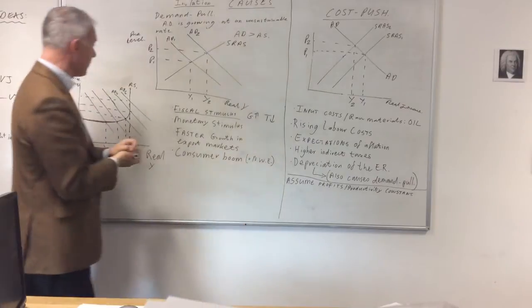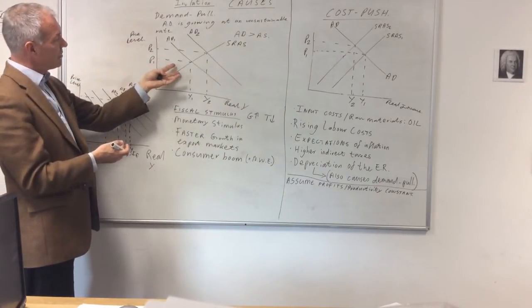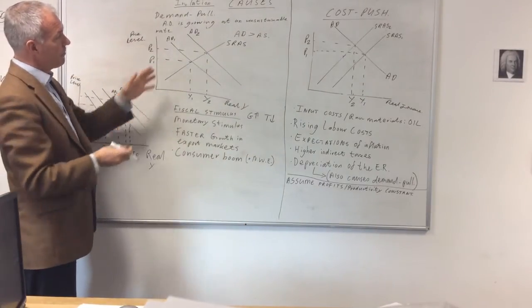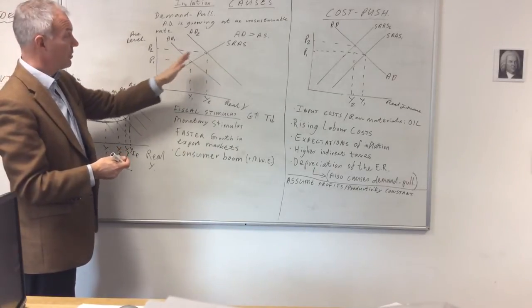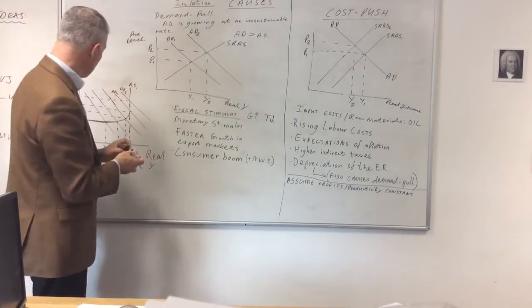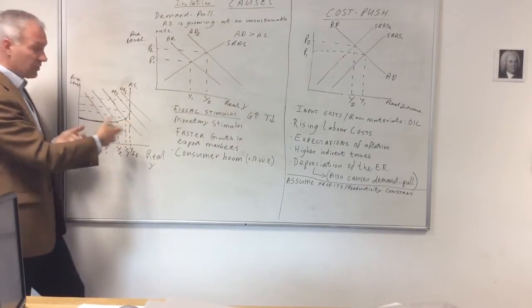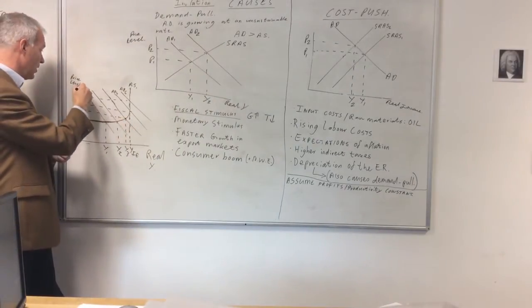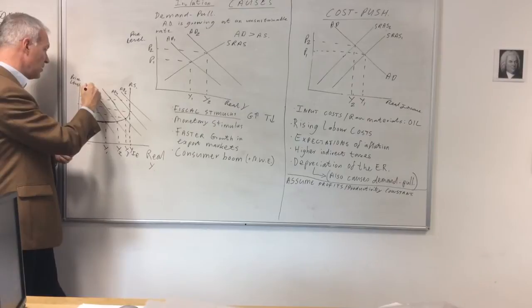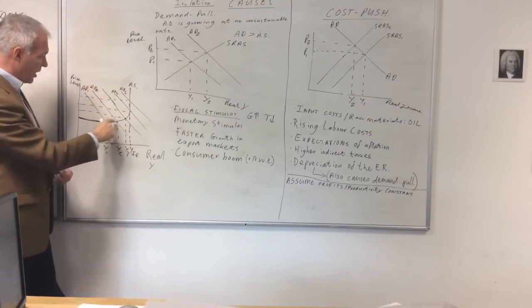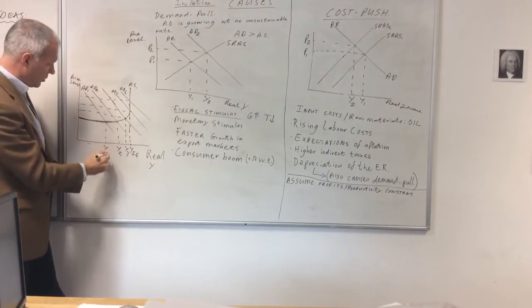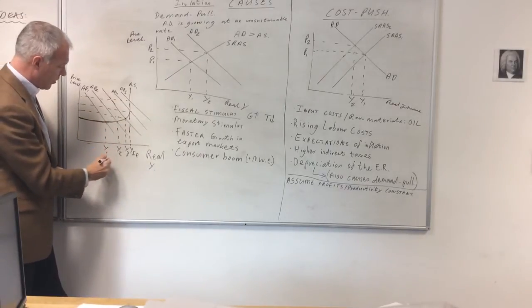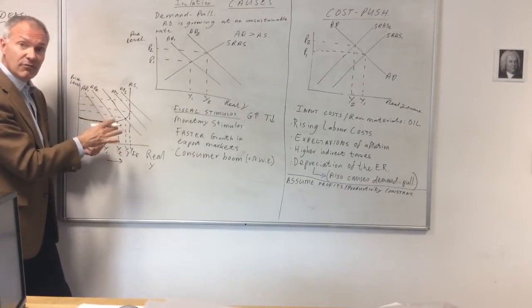However, it's worth noting that you will only really get demand-pull inflation if aggregate supply doesn't respond to the increase in aggregate demand. If we look at a more sophisticated diagram, such as a simple Keynesian diagram, if we increase aggregate demand from AD1 to AD2, notice aggregate supply is perfectly elastic at that point. So you can increase output from Y1 to Y2 without there being any inflation.